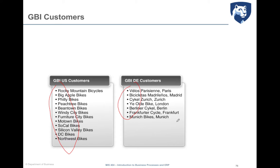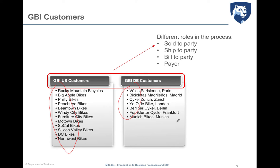We need to define some roles to understand that during the fulfillment process, a customer can have a different status and even a different name associated to it. The four required partner functions are sold-to-party, ship-to-party, bill-to-party, and payer. One customer may fill all four roles, or each role may be filled by a different customer — the important thing is that within a fulfillment process, all these roles are filled.